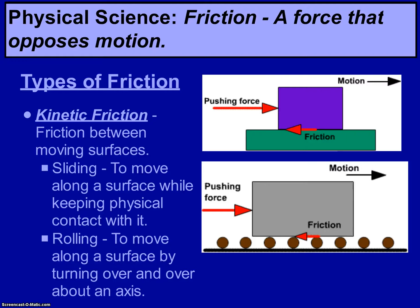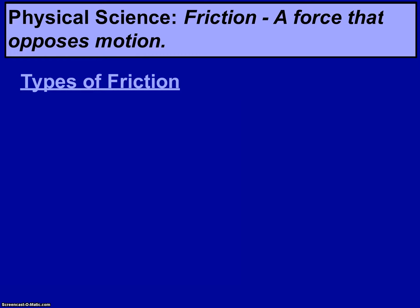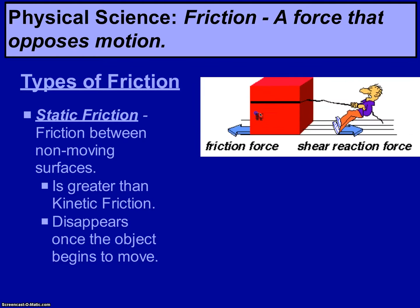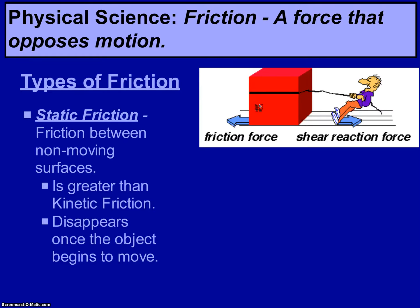The other type of friction is called static friction — friction between non-moving surfaces. If you've ever pulled against an object that was just too heavy to move, you will notice static friction. Because if the object is not moving and you're still pushing or pulling against it, there is enough friction between the surfaces to keep that object in place.